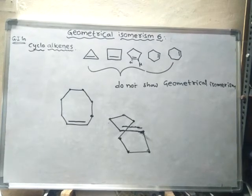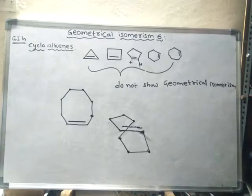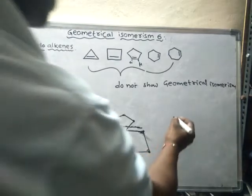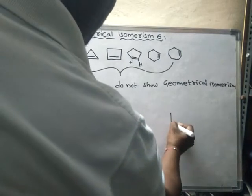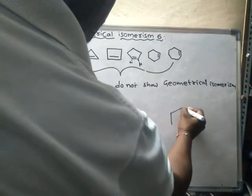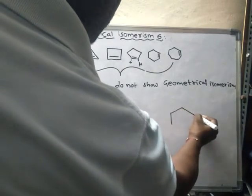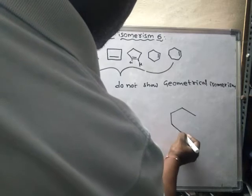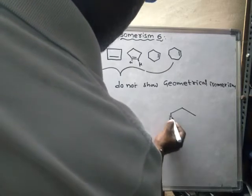Now let us check an example — suppose a compound with a 10-carbon ring. With 10 carbons in the ring and a double bond placed at various positions, let us analyze whether geometrical isomerism is possible.